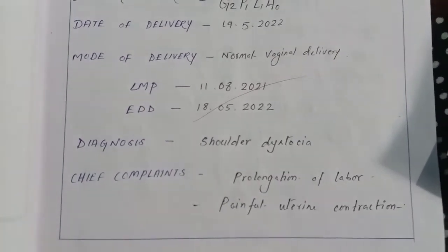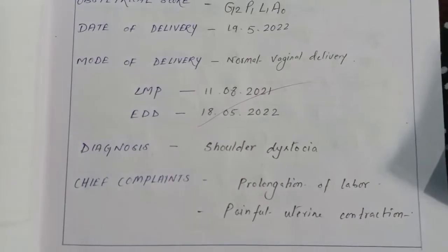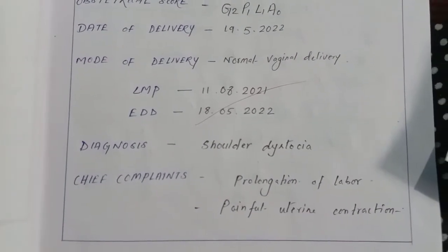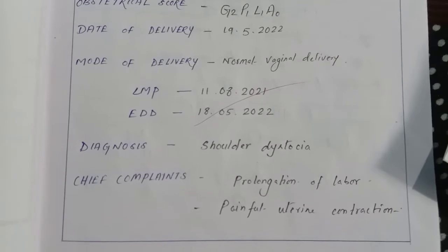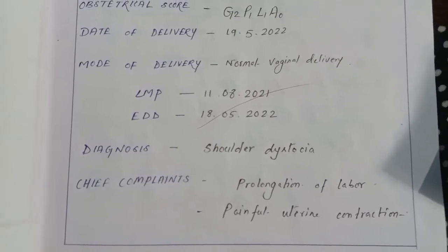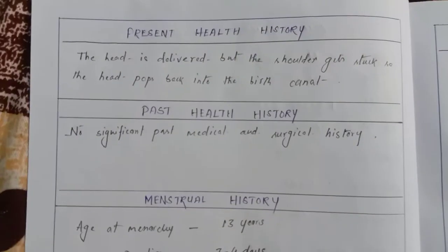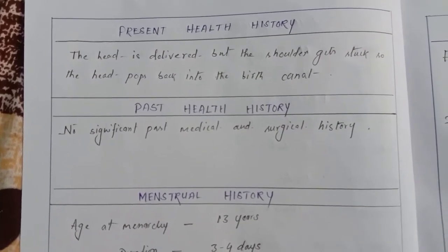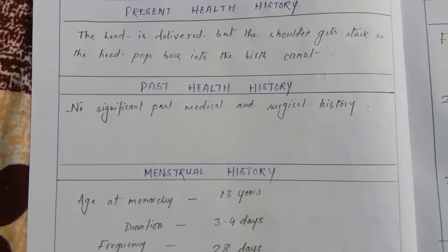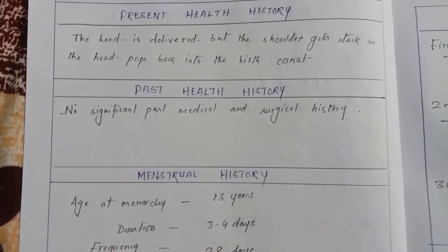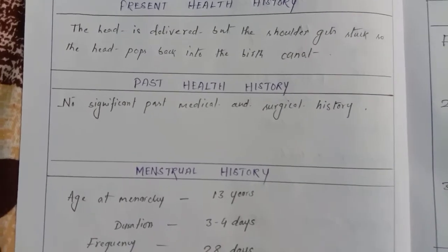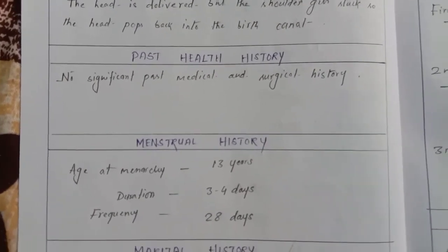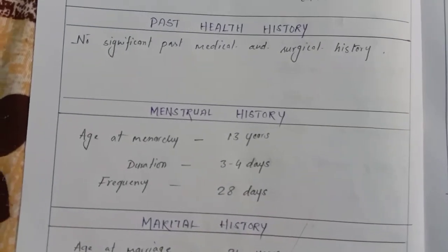Painful uterine contraction means the abdominal pain that arises during delivery, which is much more painful than normal pain. Present health history: the head is delivered but the shoulder gets stuck, so the head pops back into the vaginal canal.